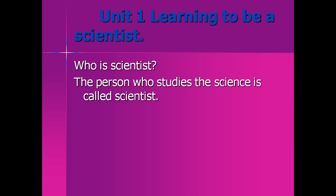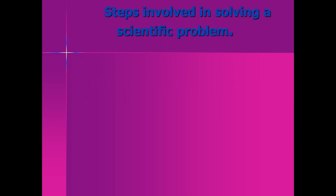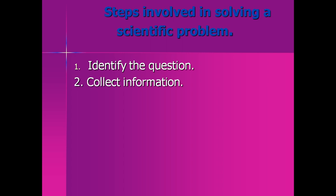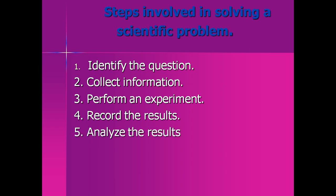Now, what are the steps involved in solving scientific problems? There are six steps: identify the question, collect the information, perform an experiment, record the result, analyze the result, and finally the conclusion. Let's explain these steps through an example.